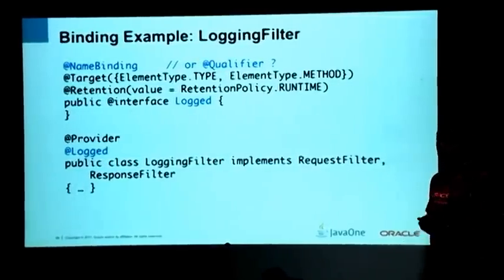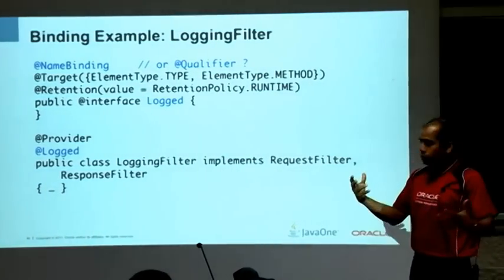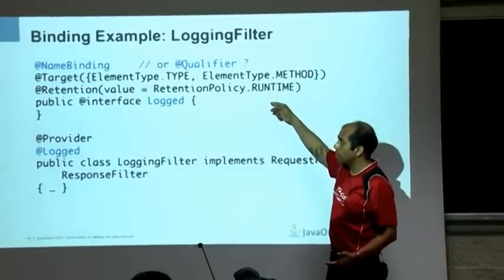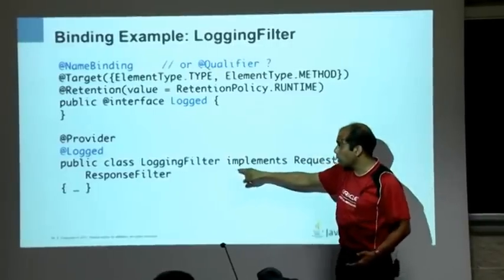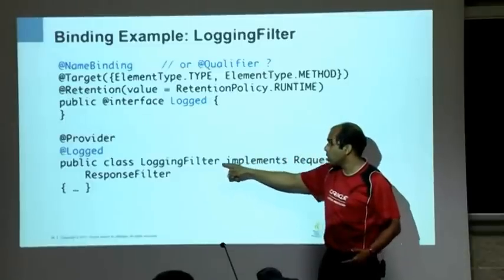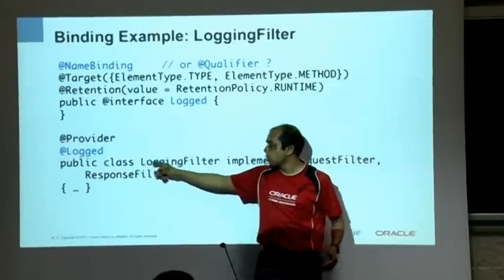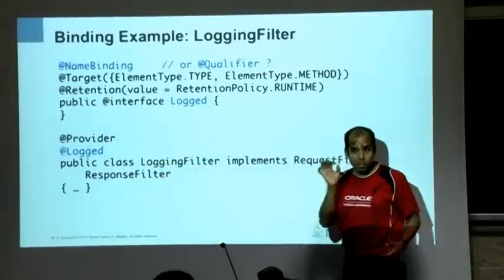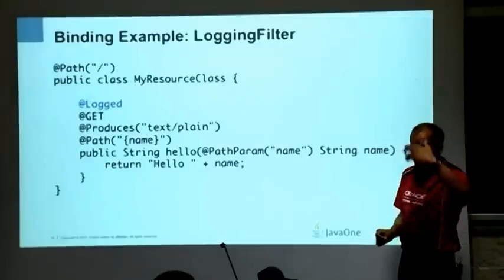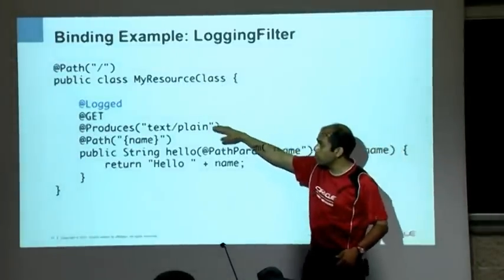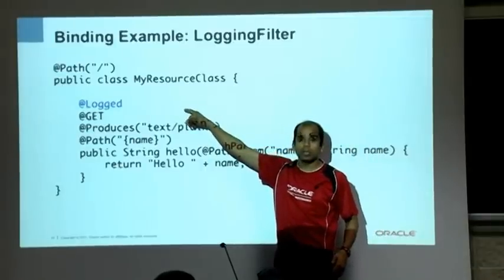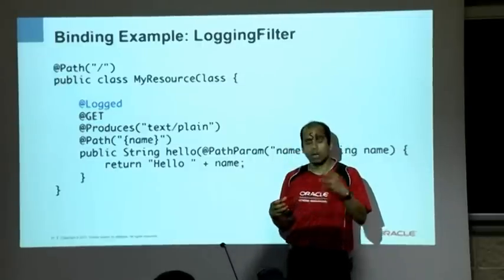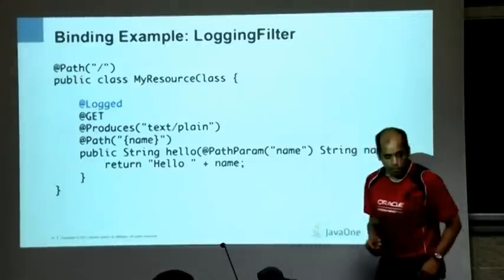How do you attach a logging filter to a RESTful resource? You define a name binding — say this is going to be my @Logged filter annotation. The filter implementing RequestFilter and ResponseFilter gets the @Provider annotation plus the @Logged annotation. Then on your POJO resource method with @GET, @Produces, @Path, you say @Logged — and only that method is attached to the filter.